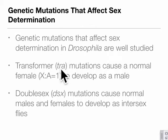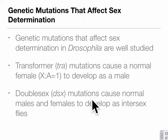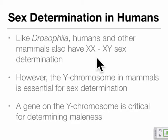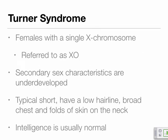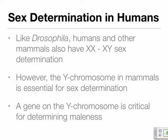In Drosophila, the sex lethal protein affects expression of the tra gene, or transformer. If a normal female has a mutation in the tra gene, she develops as a male, because the SXL protein can't interact with transformer correctly and the development follows the male pathway. Double sex acts just downstream of transformer — mutations there cause normal males and females to develop an intersex phenotype with characteristics of both sexes.